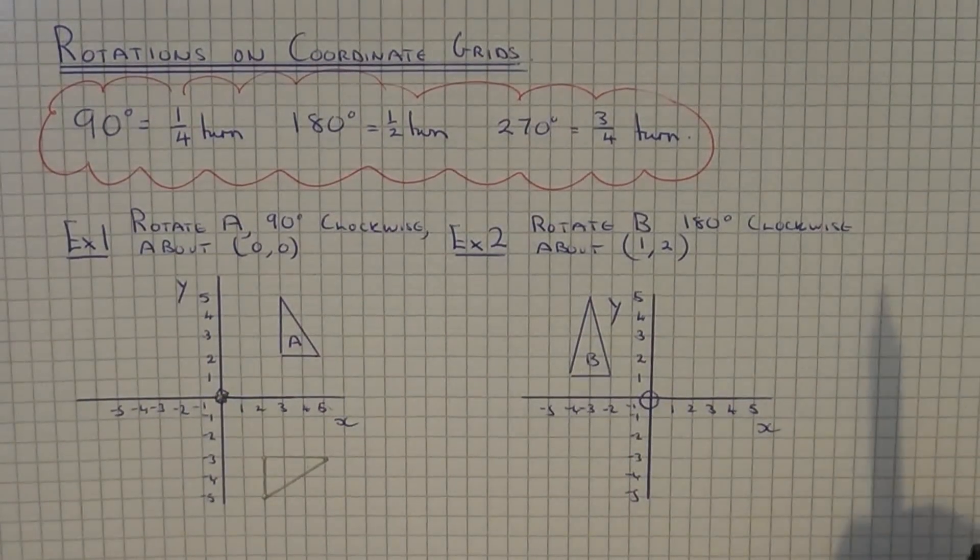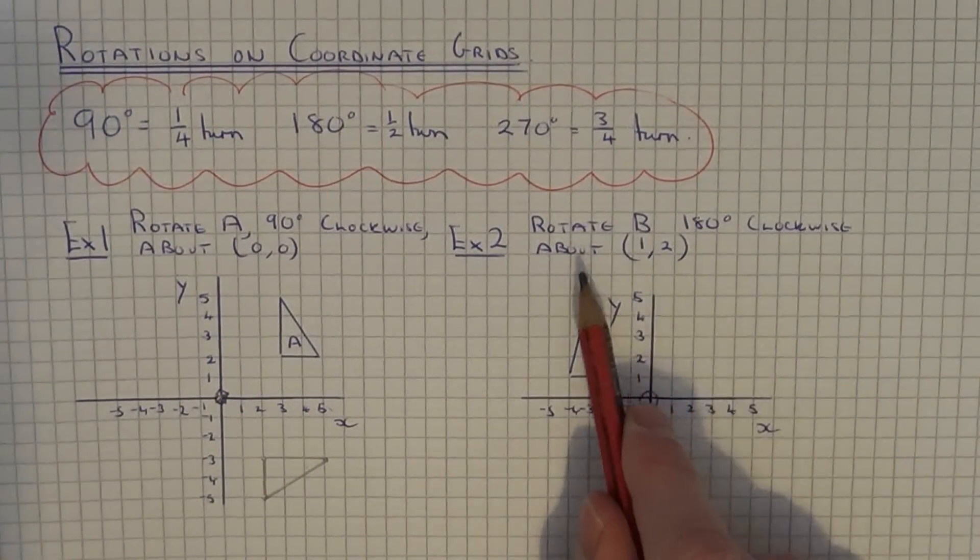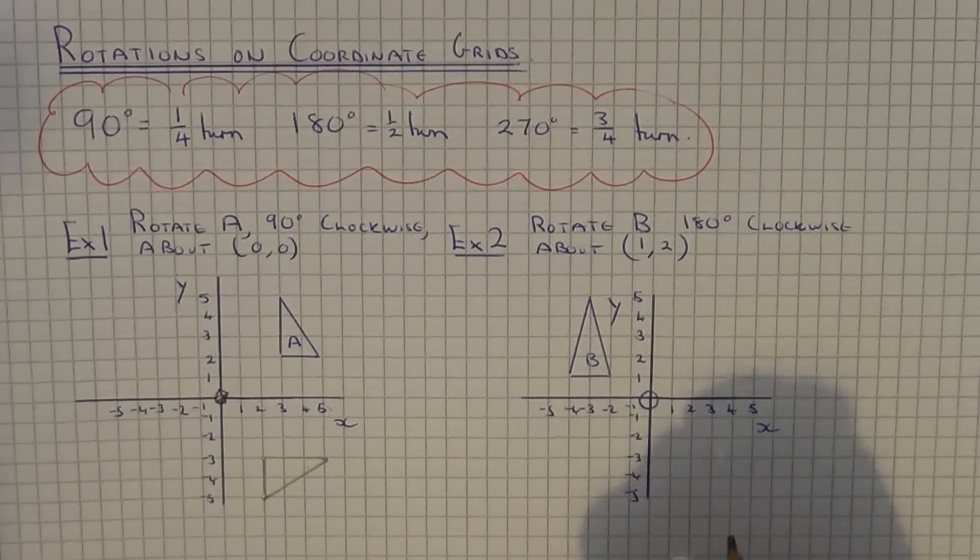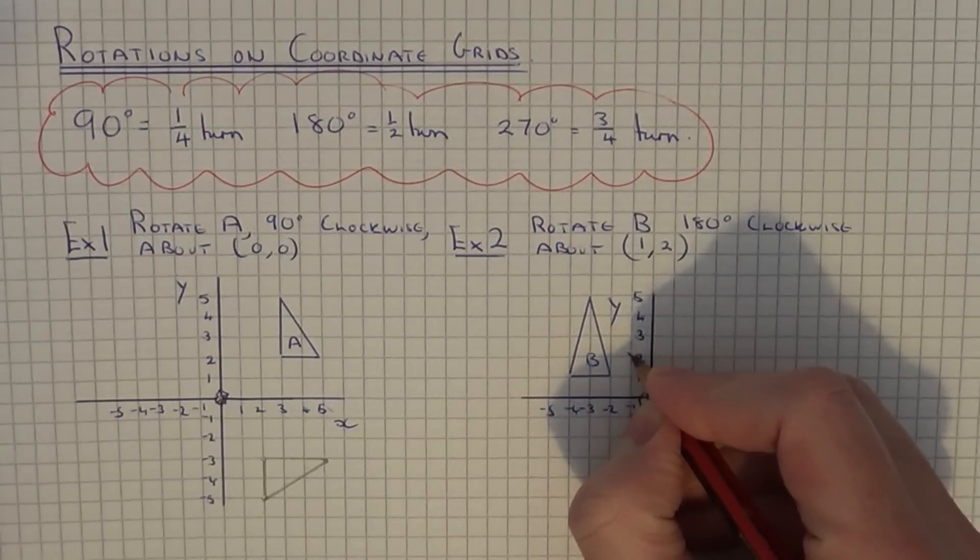Let's move on to example two. On this one we've got to rotate shape B 180 degrees clockwise about the point (1,2). First of all mark the centre of rotation which is at (1,2).